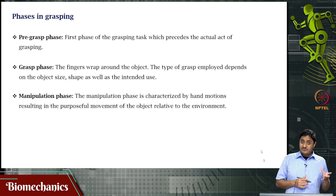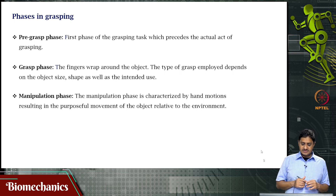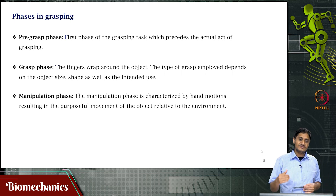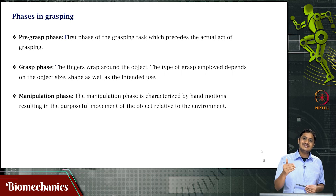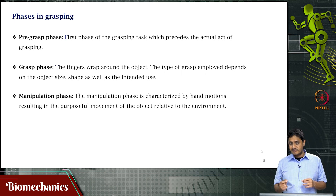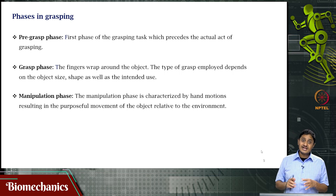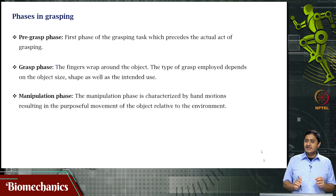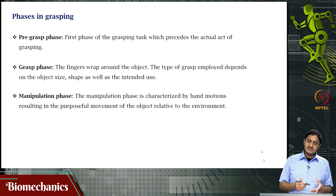The first phase is the pre-grasp phase, in which the object has not yet been touched by the fingers. This precedes the actual act of grasping and touching the object. Then comes grasping itself — when the fingers wrap around the object. Depending on the type, shape, texture, and size of the object, the grasp type might vary. Not just that — it turns out that depending on what you plan to do with the object, the type of grasp also varies.